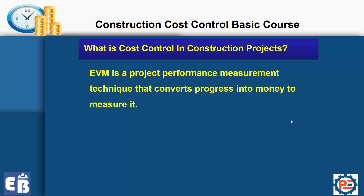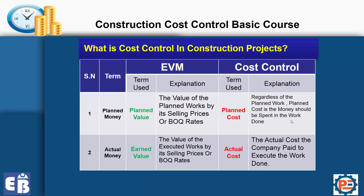Let's look at what cost control is versus what EVM is. When it comes to planned money, EVM uses the term planned value. The planned value is the value of planned works by its selling price or bill of quantity (BOQ) rates. So the planned value, which is commonly used in EVM, only focuses on the planned amount according to the selling price or BOQ rates.